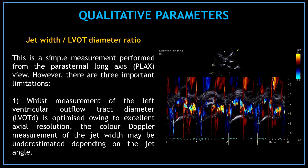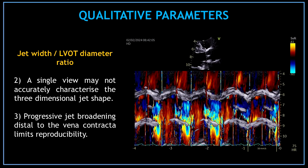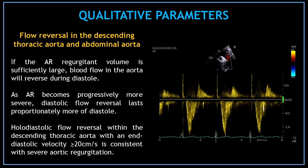The jet width LVOT diameter ratio is a simple measurement performed from the parasternal long axis view. However, there are three important limitations. Number 1: whilst measurement of the left ventricular outflow tract diameter is optimized owing to excellent axial resolution, the color Doppler measurement of the jet width may be underestimated depending on the jet angle. Limitation number 2: a single view may not accurately characterize the three-dimensional jet shape. And limitation number 3: progressive jet broadening distal to the vena contracta limits reproducibility.